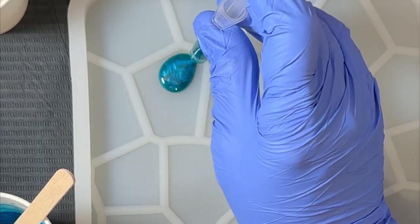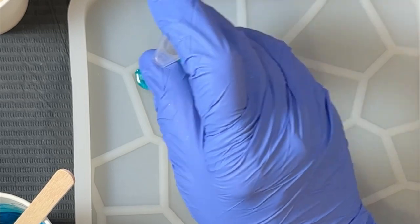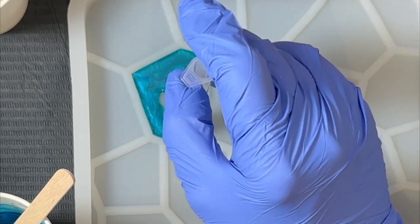So I just mixed up about eight ounces of resin and then I separated that into different cups and added my pigment.